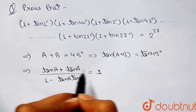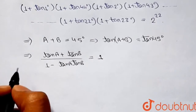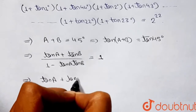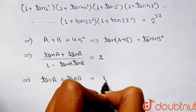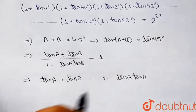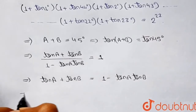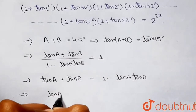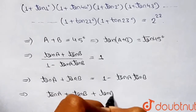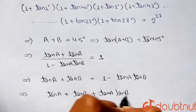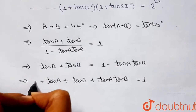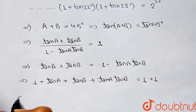So (tan a + tan b) / (1 − tan a · tan b) = 1, which gives us tan a + tan b = 1 − tan a · tan b. Taking tan a · tan b to the left-hand side: tan a + tan b + tan a · tan b = 1.